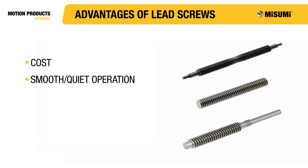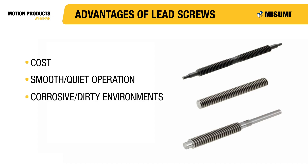Another benefit of not having ball bearings inside the nut is that lead screws can be used in corrosive and dirty environments. Because lead screws do not have hardened ball bearings coming into direct contact with the surface of the thread, it is not required that the shafts be hardened. This allows for the use of less corrosive materials for both the shaft and the nut — for example, 303 stainless steel instead of the more rust-susceptible 440C stainless. The nuts don't even have to be made out of metal; they can be made out of resins like PPS or polyacetyl. Some combinations of shaft and nut material can even be used without grease, which is useful in dirty environments.